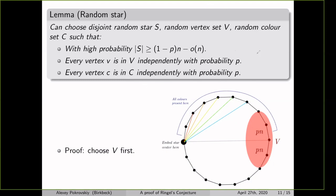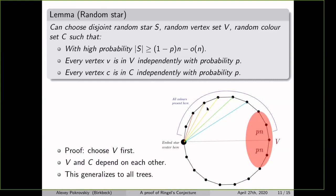An important remark: although the vertices and colors are each individually nicely distributed, their joint distribution is not independent — vertices and colors can depend on each other, and this is a necessary difficulty when dealing with high-degree vertices. A second remark: this lemma generalizes to any tree of the right size, not just stars.